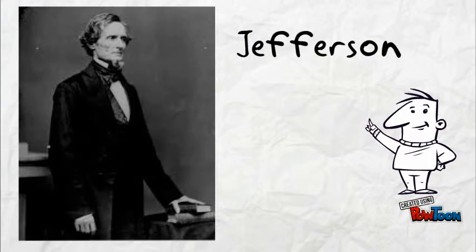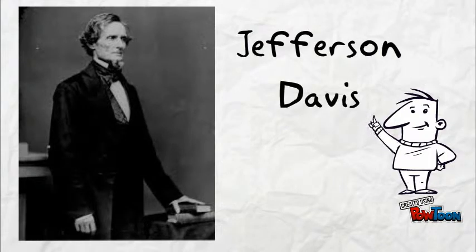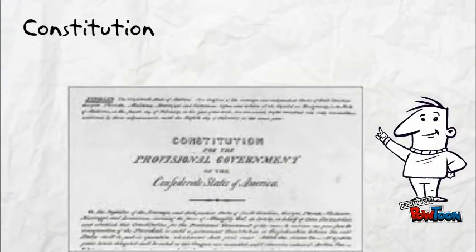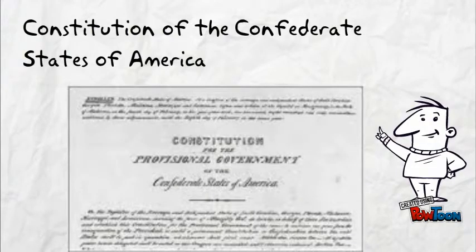A President for the Confederacy. February the 9th, 1861. Jefferson Davis is chosen as the President of the Confederate States of America. He will be elected that November.